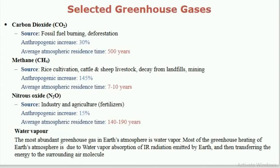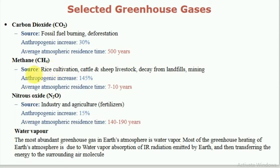Looking at selected greenhouse gases: carbon dioxide — its source is fossil fuel burning and deforestation. The anthropogenic increase is 30%, meaning human activities have increased carbon dioxide by 30%. The average atmospheric residence time of carbon dioxide is 500 years.